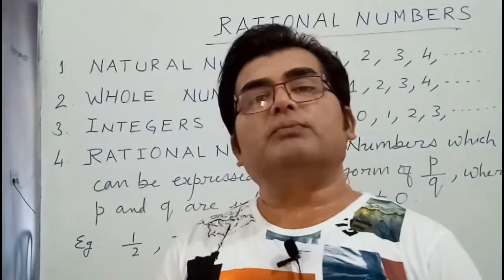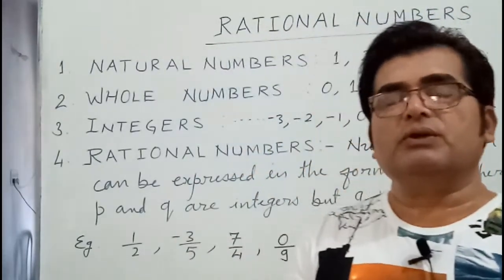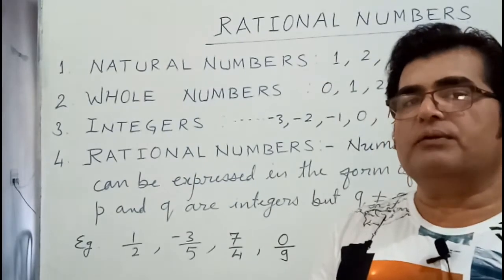Is 9 upon 0 a rational number? No, because Q becomes 0. Denominator is becoming 0, so it will not be a rational number.